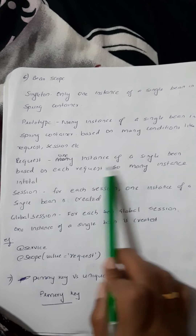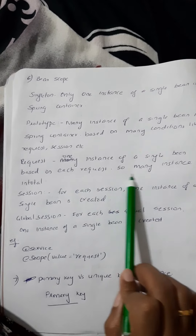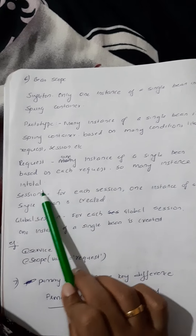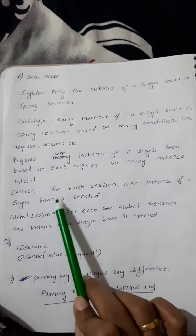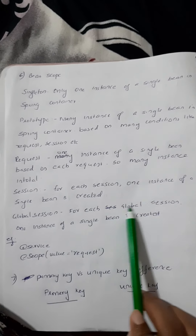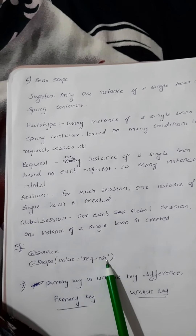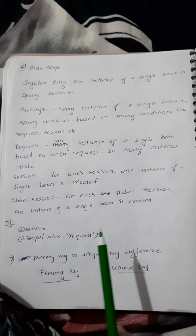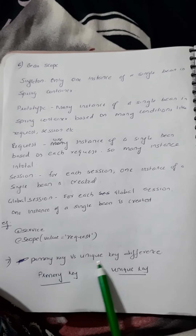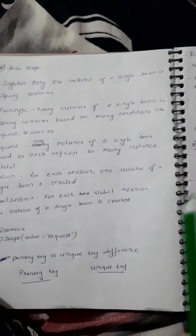The prototype scope is based on conditions — the next request creates a new instance. We have a single bean returning the same instance. There is a different session or different instance, and different instances also apply to global sessions.